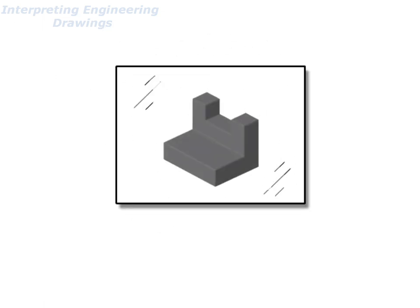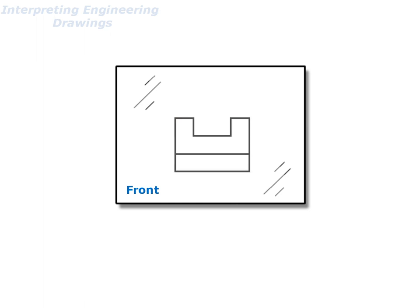Now, let's place the object behind the glass and trace the outline. Move this pane of glass to the side.